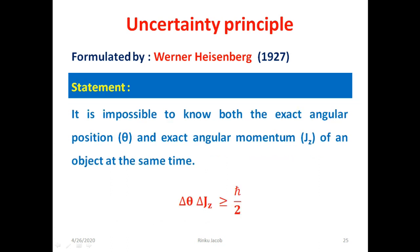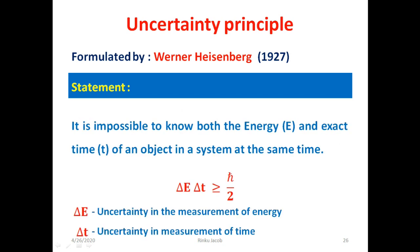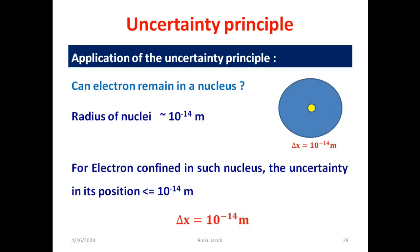The second uncertainty relation is between angular position and angular momentum of a rotating particle. It is impossible to measure both exact angular position theta and exact angular momentum J simultaneously; the product delta-theta times delta-J is greater than or equal to ħ/2. The third relation is between energy and time: it is impossible to measure both energy E and time t simultaneously. The product delta-E times delta-t is equal to or greater than ħ/2.